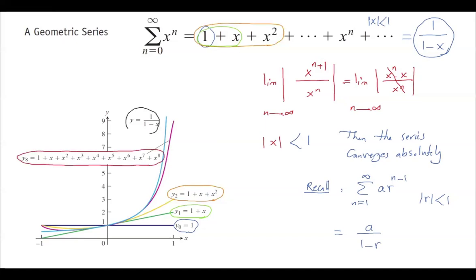We know that this geometric series, as long as the absolute value of x is less than 1, is converging to 1 over (1 minus x). The graph of 1 over (1 minus x) behaves like this. So if you add more terms — more polynomials together — you see you have a better and better approximation for this power series, which in this case is a geometric series.